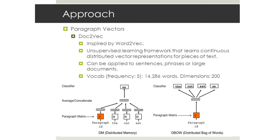The second approach I took was paragraph vectors - an algorithm called Doc2Vec. It was developed by the same person who developed Word2Vec, Thomas Mikolov. It's basically an unsupervised learning framework that learns continuous distributed vector representations of pieces of text, and it can be applied to sentences, phrases, or large documents. My vocabulary was 14,000 words with a minimum occurrence of five times, and I found 200 dimensions worked very well.